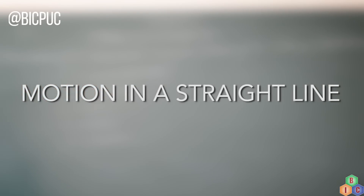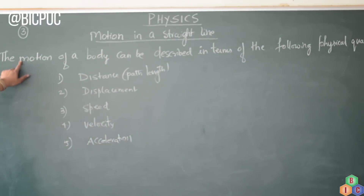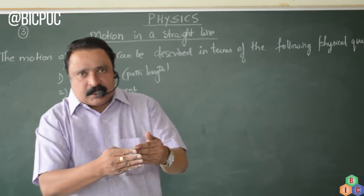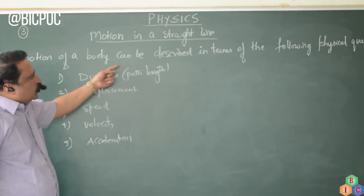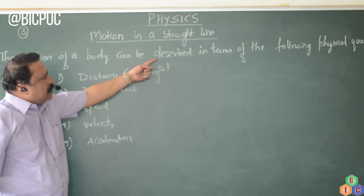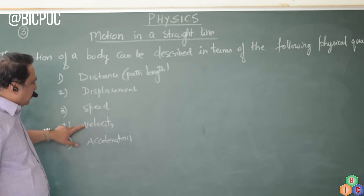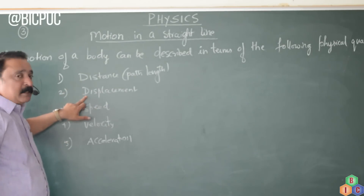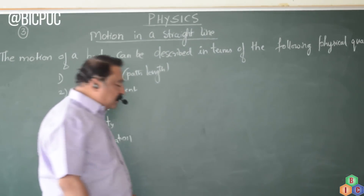Motion in a straight line — let's understand some important terms. The motion of a body can be described in terms of the following physical quantities. Whenever a body moves, it changes its position with respect to time. The motion is best explained with the help of five terms: distance or path length, displacement, speed, velocity, and acceleration.